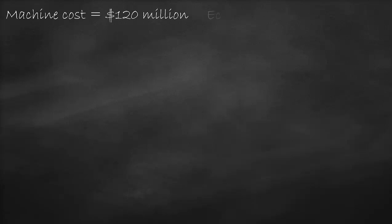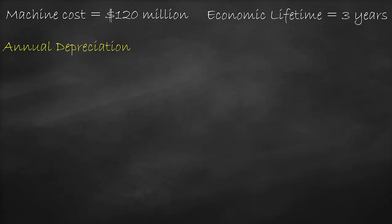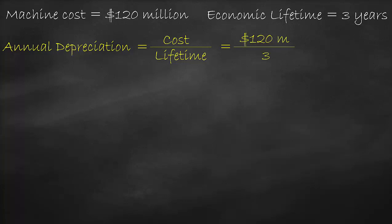Let's assume that we bought a machine for $120 million and its economic life is 3 years. The annual depreciation of this machine, based on the straight line method, is equal to the cost of the machine divided by its economic lifetime. In this case, this would be $120 million divided by 3 years, which is equal to an annual depreciation of $40 million.